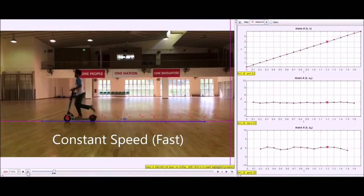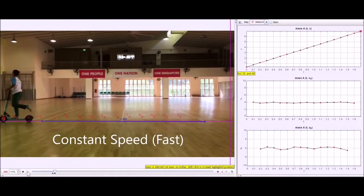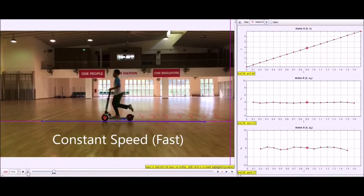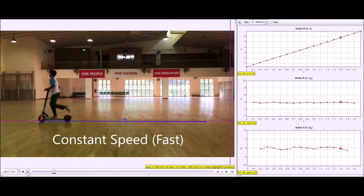The first graph is still a straight diagonal line. However, the gradient is now steeper. This shows that he is moving more distance per unit time, and therefore, he is moving with a faster constant speed.